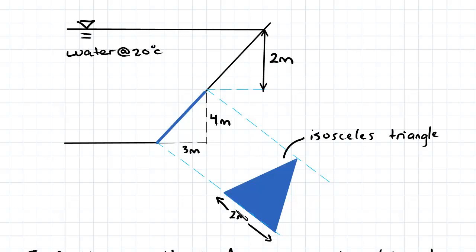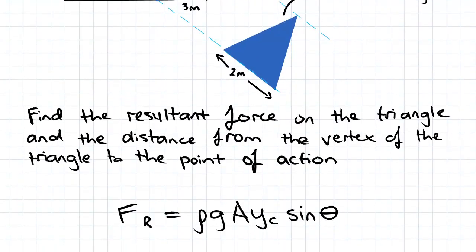Here we've got an isosceles triangle, a slanted surface under a fluid which is water at 20 degrees Celsius. We've been given a few distances here which we'll need, and we've been asked to find the resultant force on the triangle due to the fluid and the distance from the vertex of the triangle to the point of action.